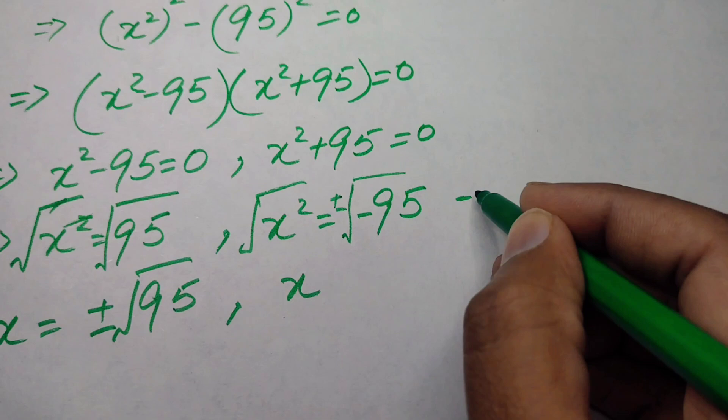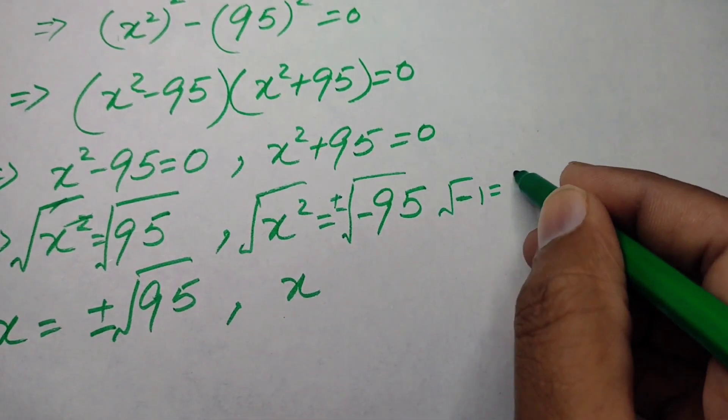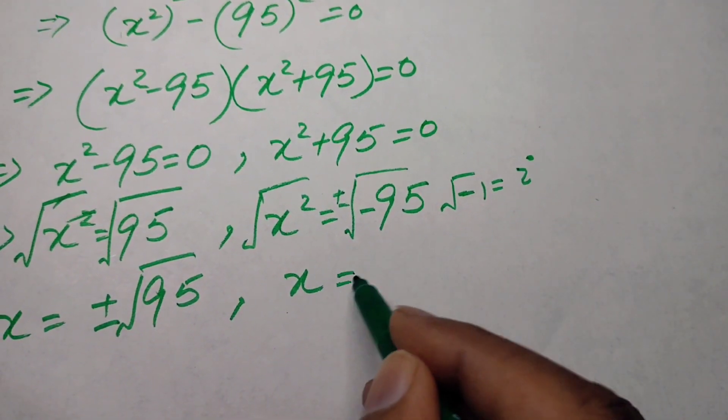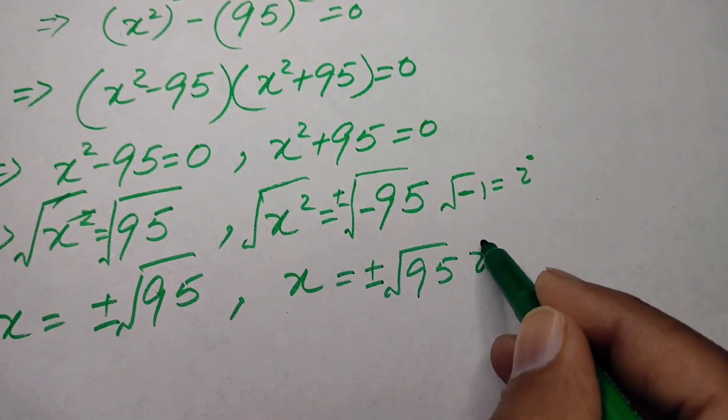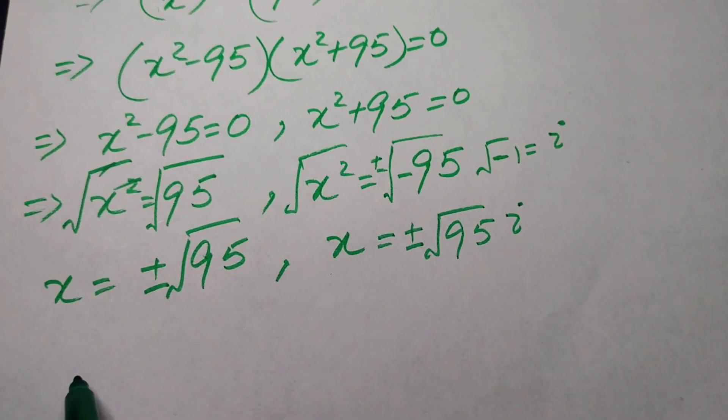Here we know that the square root of minus 1 is equal to iota, so we will write this term as square root of 95 iota.